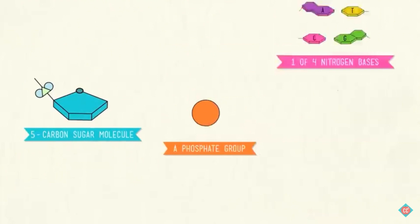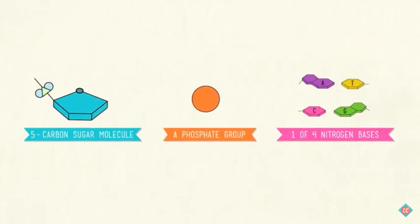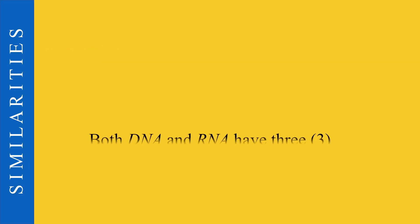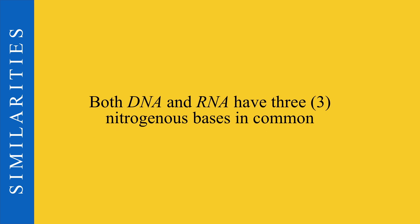Both DNA and RNA have all three components. The sixth similarity between DNA and RNA relates to the nitrogenous bases. There are five types of nitrogenous bases: adenine, thymine, guanine, cytosine, and uracil. Three of these bases are shared by both DNA and RNA: adenine, guanine, and cytosine. This is the final similarity between DNA and RNA.